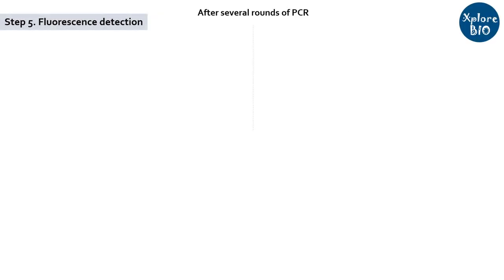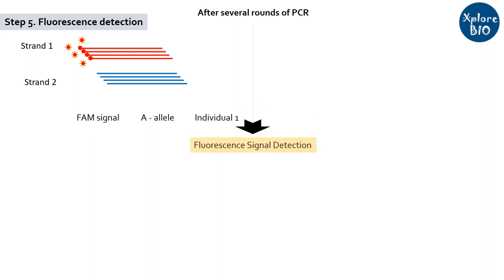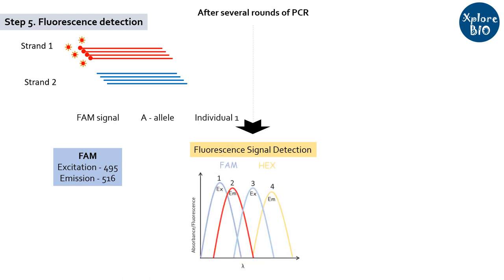After several rounds of PCR, sufficient PCR product comprising fluorescently labeled strand and non-labeled strand will accumulate. Using a fluorescence detection system as used for real-time PCR or qPCR, you can detect if a specific allele is present or not based on the fluorescence emitted.